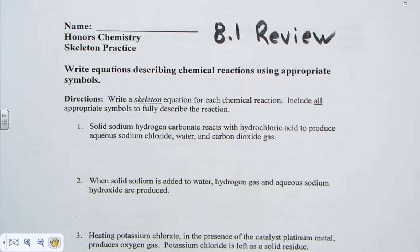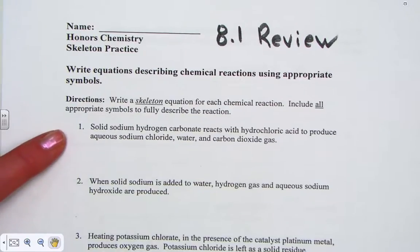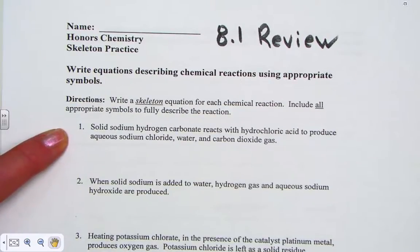Also placing into our skeleton all of the appropriate symbols that are being used to describe states of matter, heating, catalyst, and so forth. Really a true test in nomenclature. Let's read number one together. It says, solid sodium hydrogen carbonate reacts with hydrochloric acid to produce aqueous sodium chloride, water, and carbon dioxide gas.